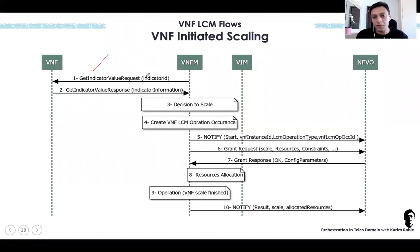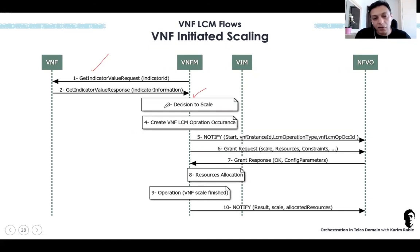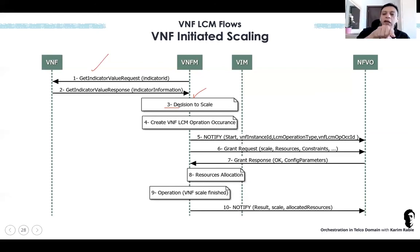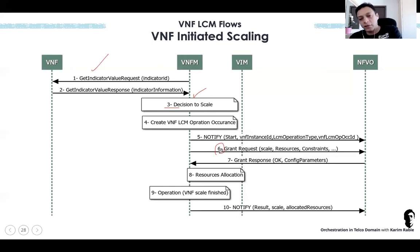Let's say the monitoring parameter is CPU utilization. The VNFM keeps receiving CPU utilization data, and once it reaches a threshold — say 80% — the VNFM takes a decision to scale. How did the VNFM make that decision? Because the policy is defined in the VNF Descriptor: when CPU reaches 80%, you must scale. That's closed-loop control: we did an instantiation, kept monitoring, detected a threshold crossed, and now we do scaling. That's part of the orchestration capability.